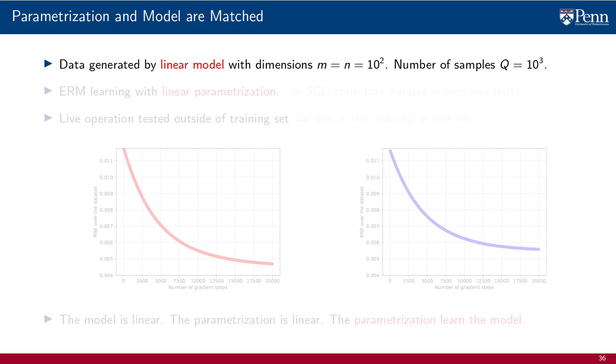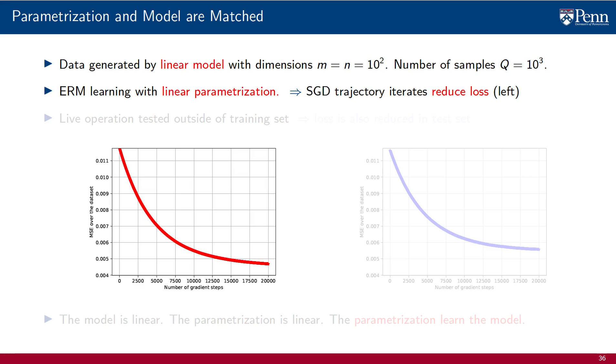Begin by considering data generated with a linear model. We are using dimensionality 100 for inputs and outputs, and we operate with 1000 entries in the training set. Our ERM problem uses a linear learning parametrization. As shown on the plot on the left of your screen, the iterates of the SGD trajectory reduce the loss. We are therefore succeeding at solving the ERM problem. And the loss to which we converge is small. Thus, we are learning an AI that approximates the model well within the training set.